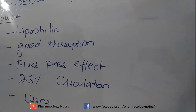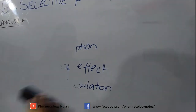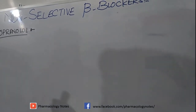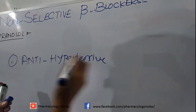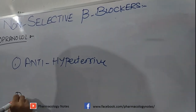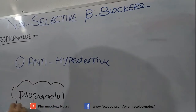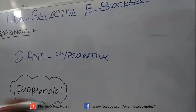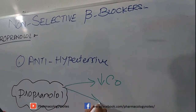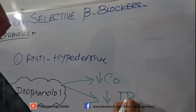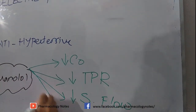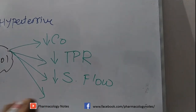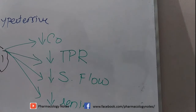The therapeutic uses of propranolol correspond to its pharmacological actions. Because it decreases cardiac output and SA node activity, it is used as an antihypertensive. As an antihypertensive, propranolol works by decreasing cardiac output, decreasing total peripheral resistance, decreasing sympathetic flow, and decreasing renin release — thus reducing the renin-angiotensin pathway.